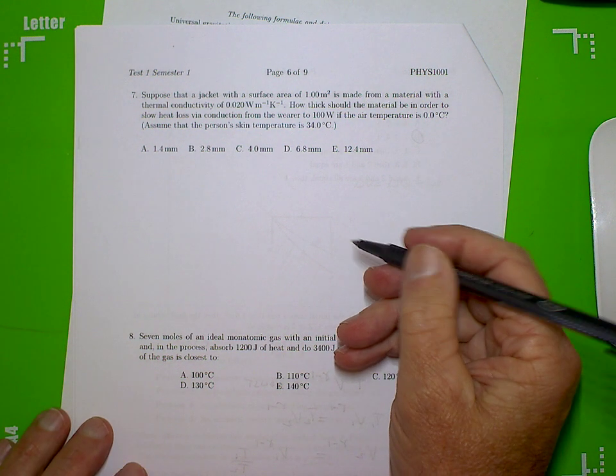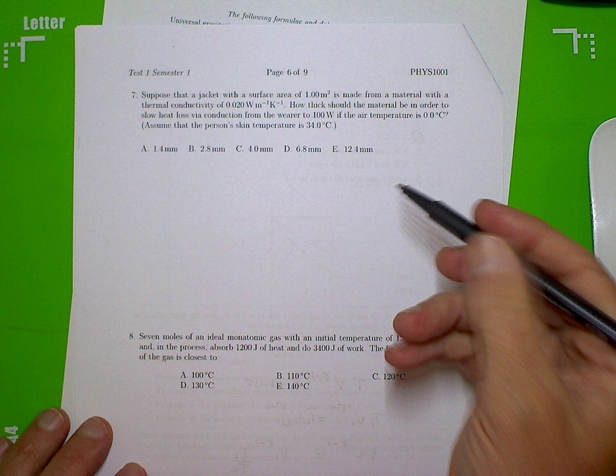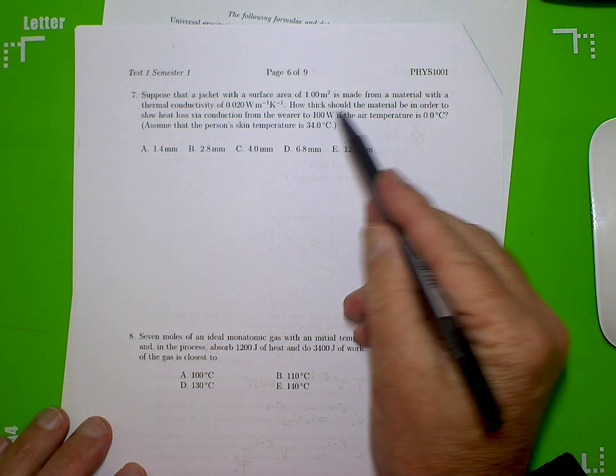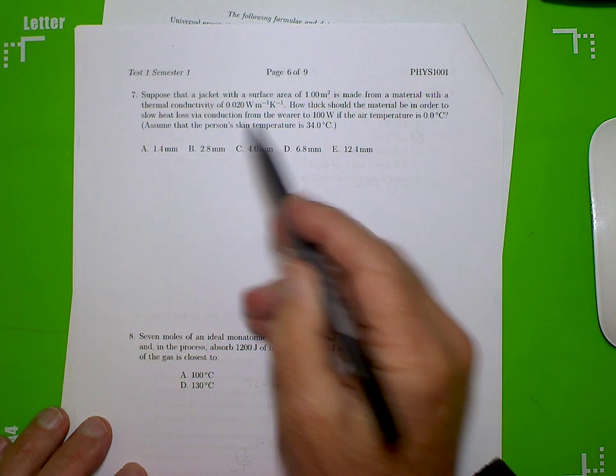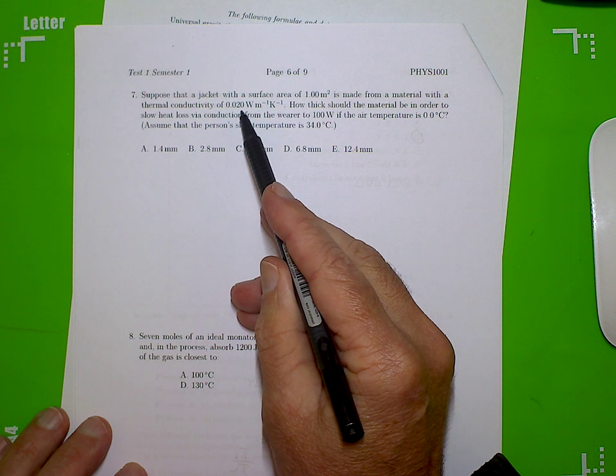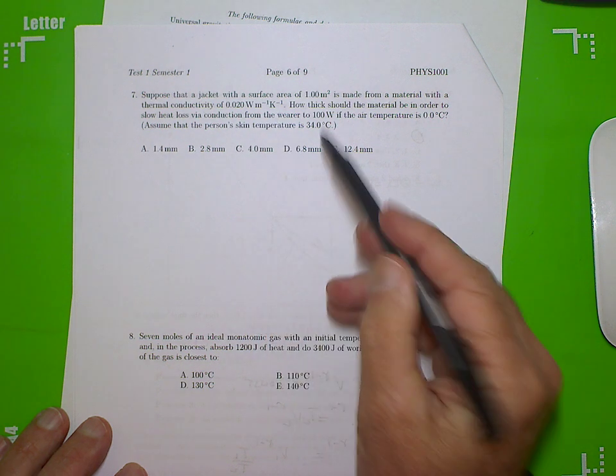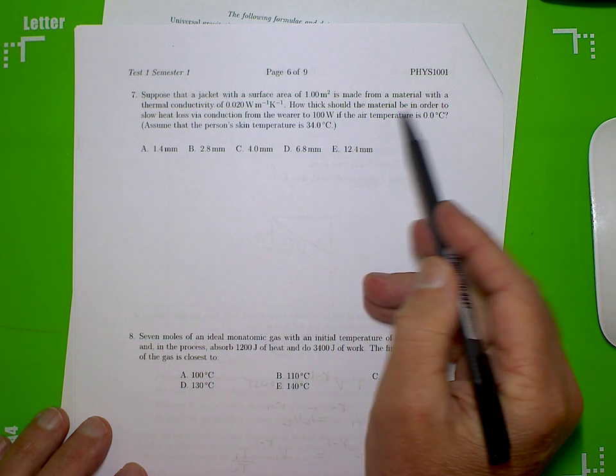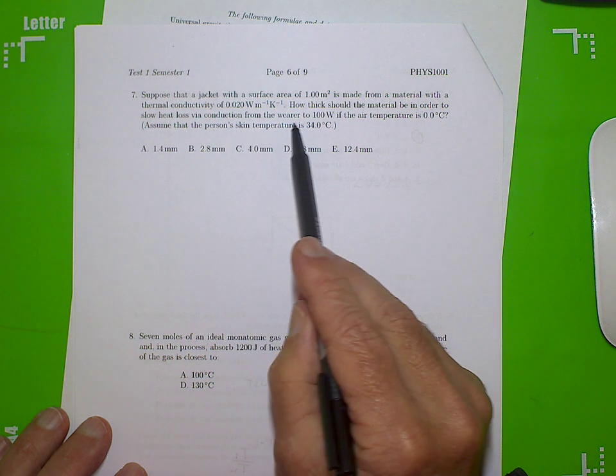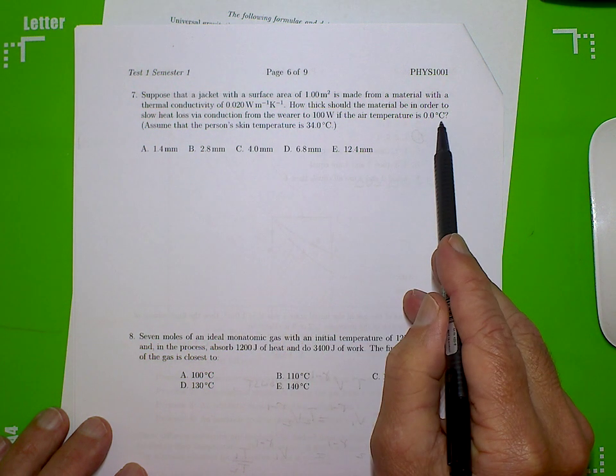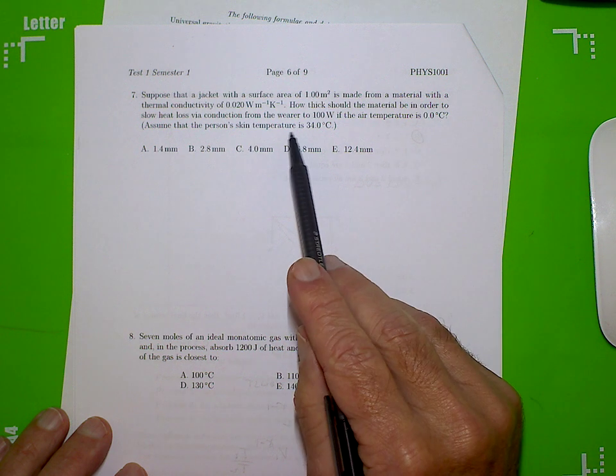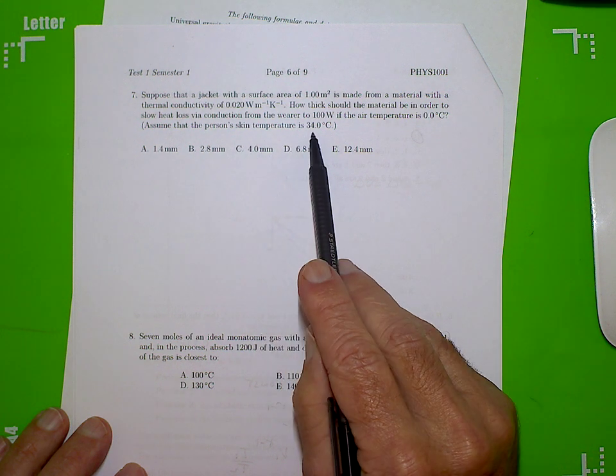Okay, carrying on test one, question seven. Suppose that a jacket with a surface area of one square meter is made from a material with a thermal conductivity of 0.02 watts per meter per degree Kelvin. How thick should the material be in order to slow heat loss via conduction from the wearer to 100 watts if the air temperature is zero degrees C and we're going to assume that the person's skin temperature is 34.